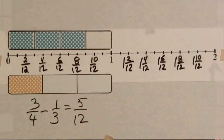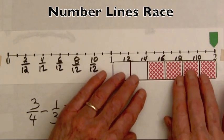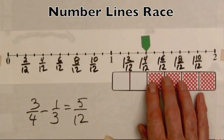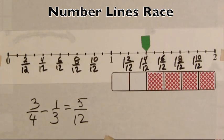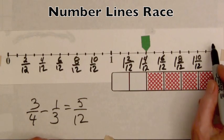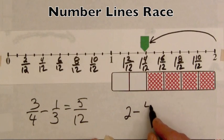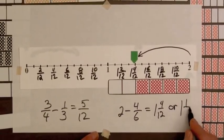These number lines can also be used for a number lines race. Each player places a marker above the point two, then selects a bar that tells how far the marker can be moved — going down to a point. The player moves from two down to one and four-twelfths, which is one and one-third. If the equation were written, it would be: two minus four-sixths equals one and four-twelfths, or one and one-third.